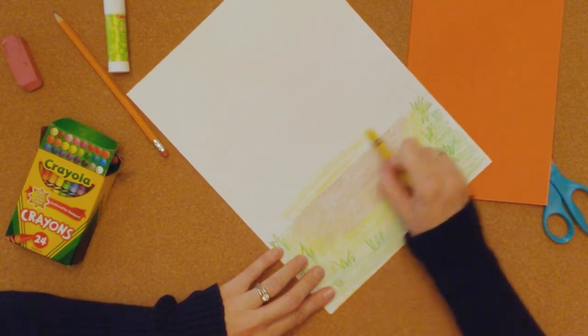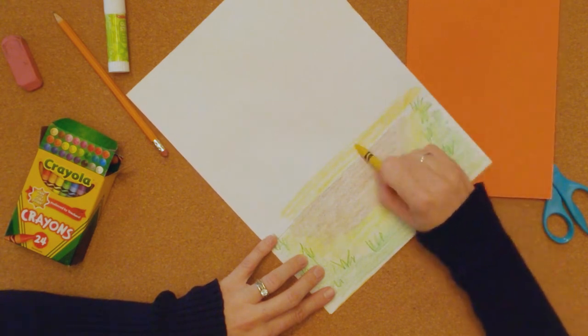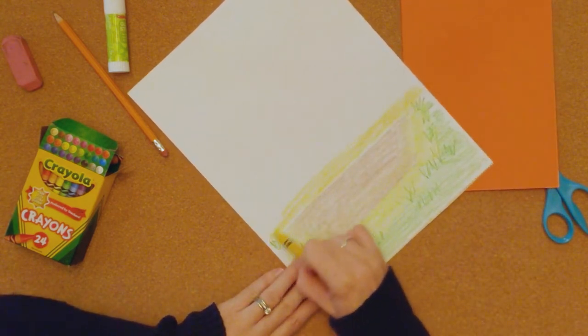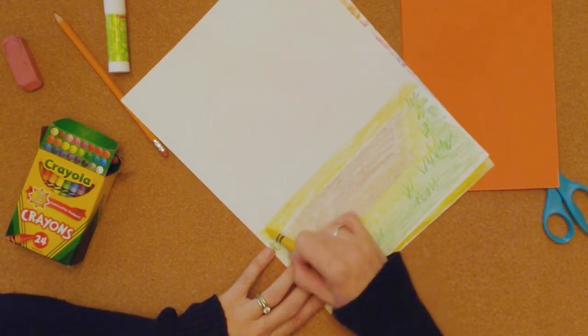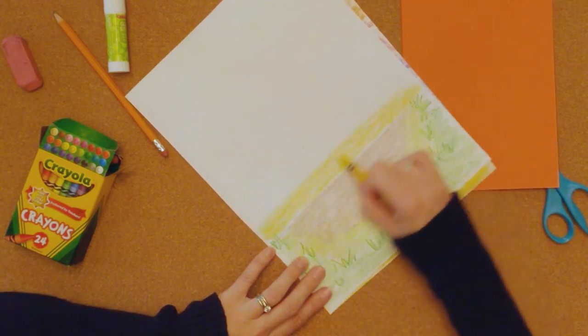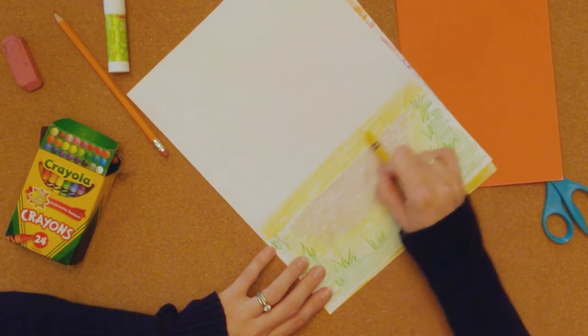We're going to do a stripe of yellow all the way across the page from one side all the way to the other. Okay, just put a nice stripe of yellow.